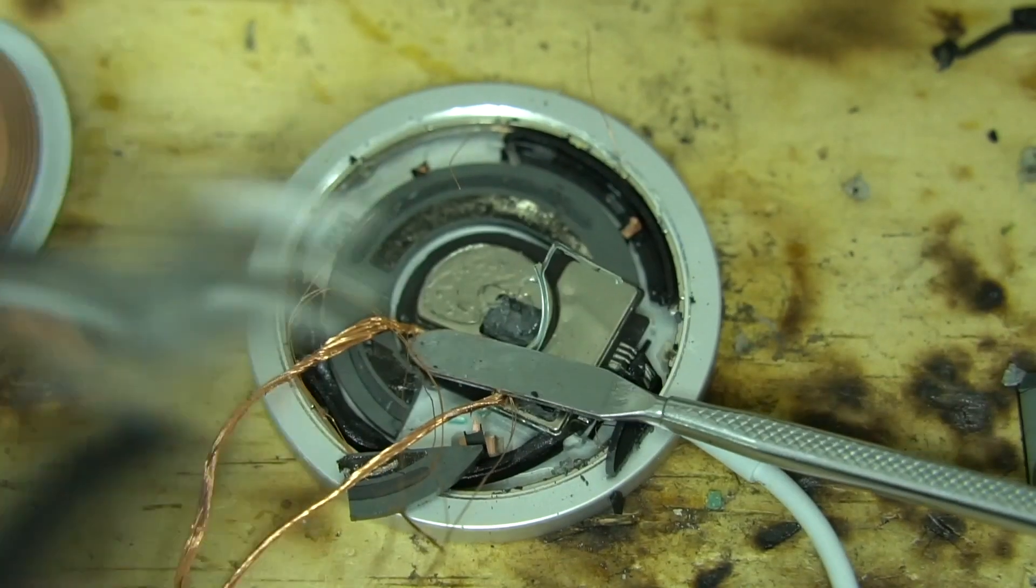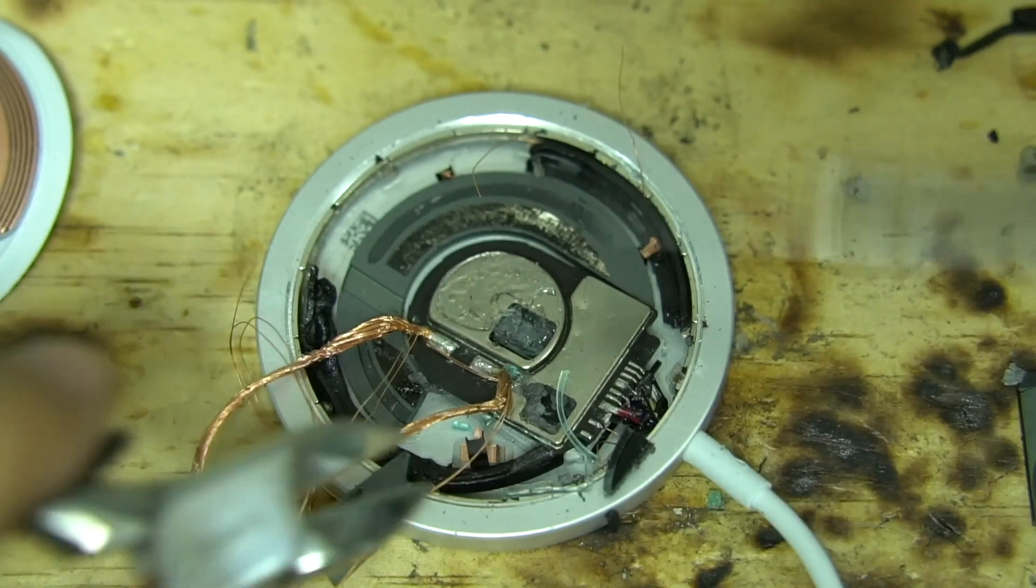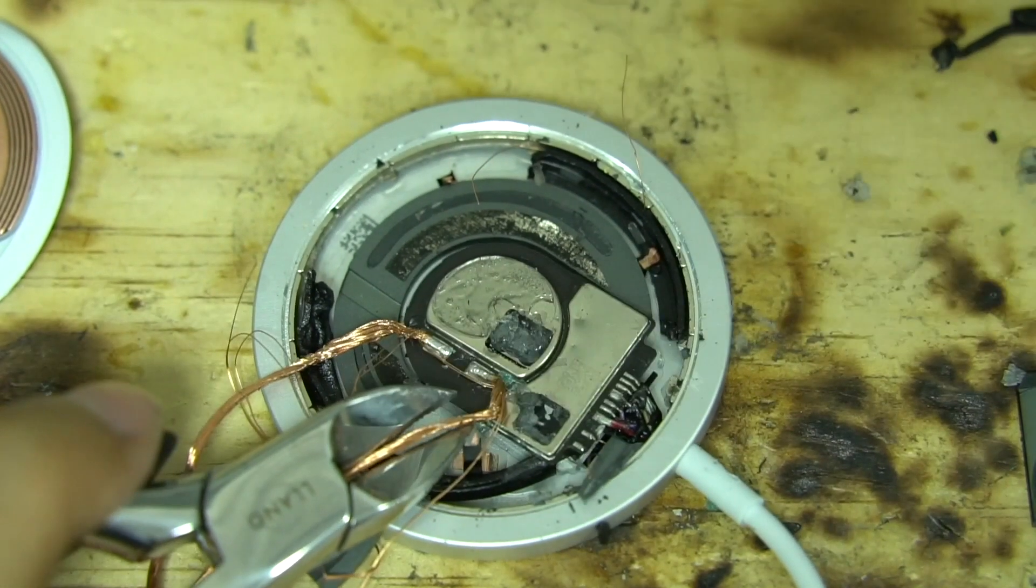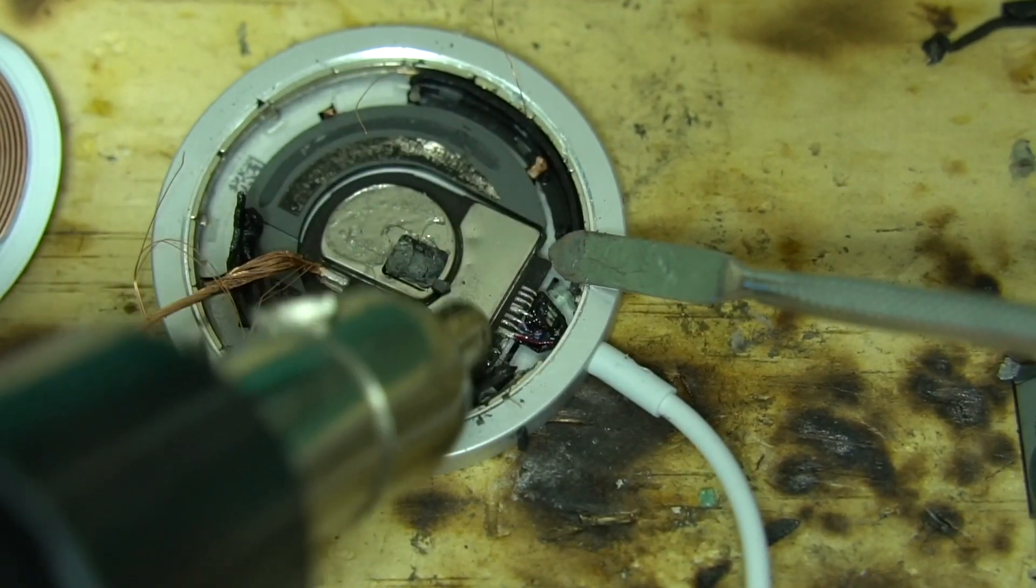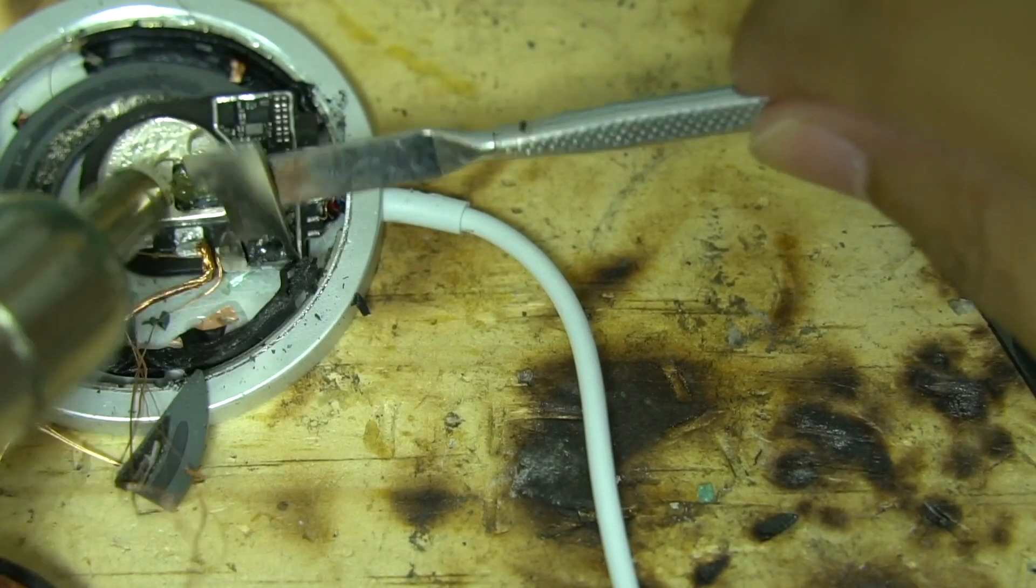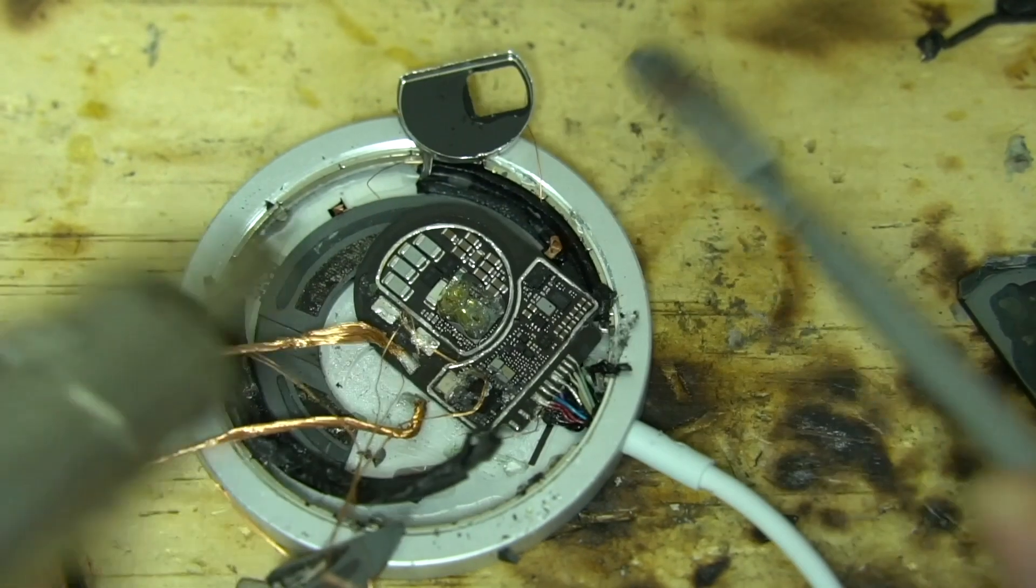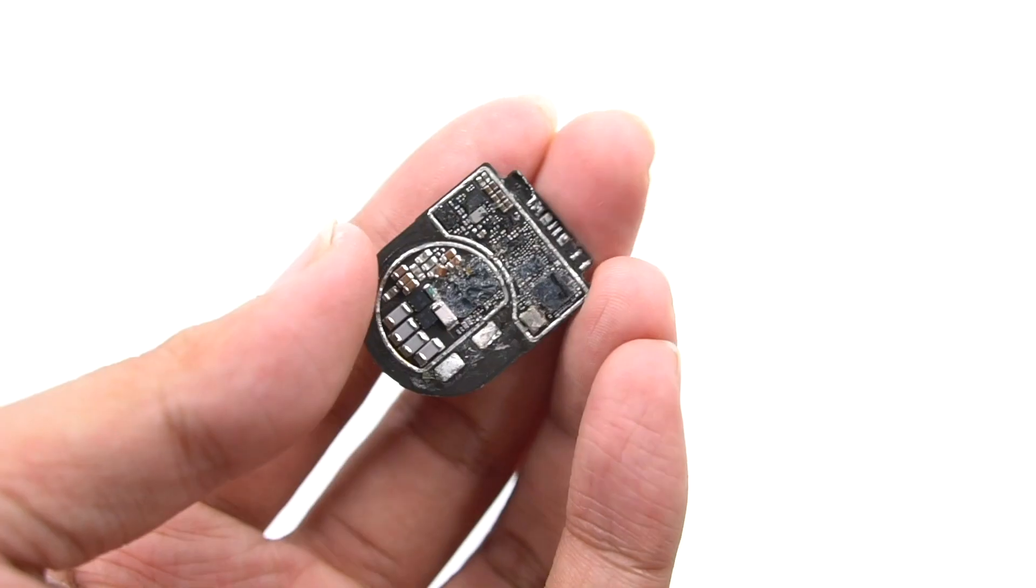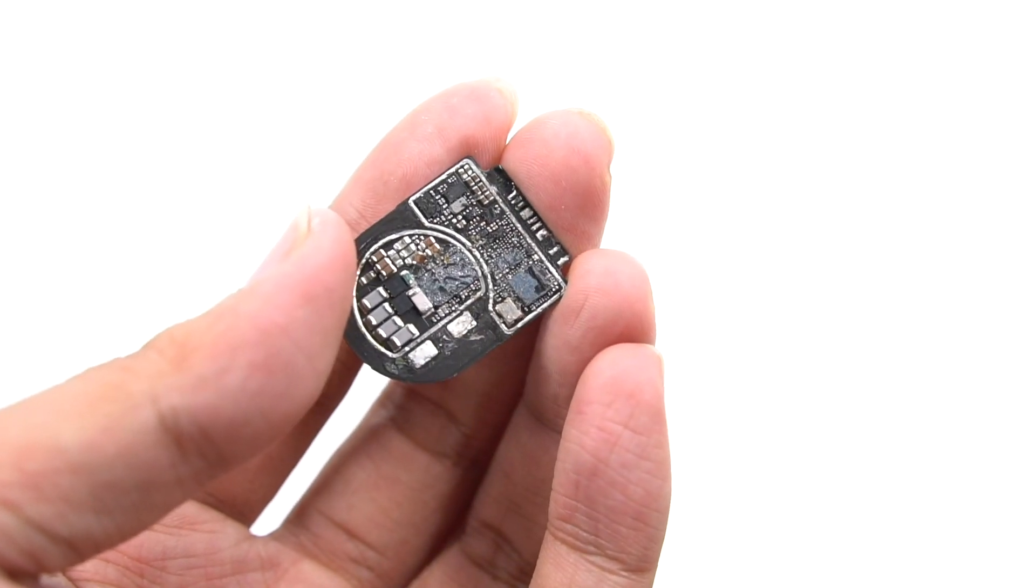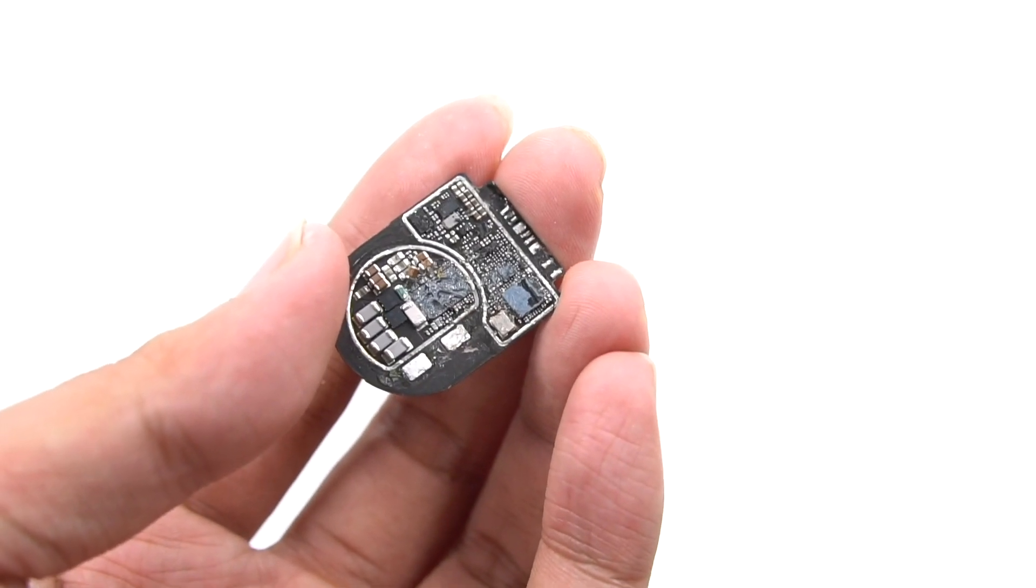Back to the PCB. The front is covered with a shield. And there are two holes on the shield. Then remove it by heating with a heat gun. So this small PCB has two parts: the control part and the wireless charging part.